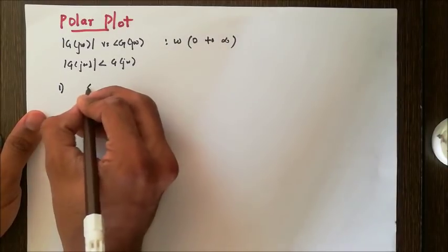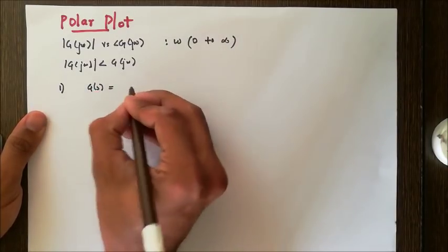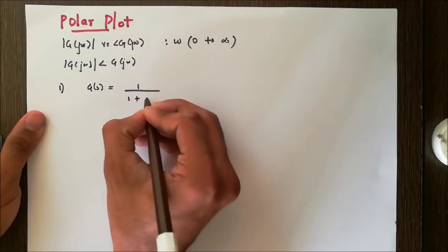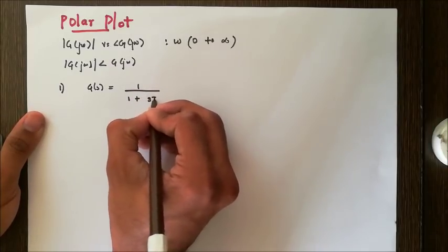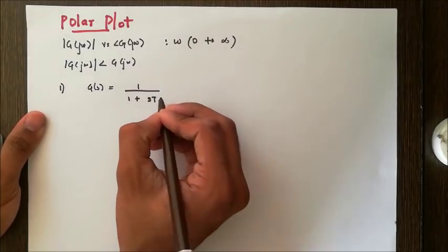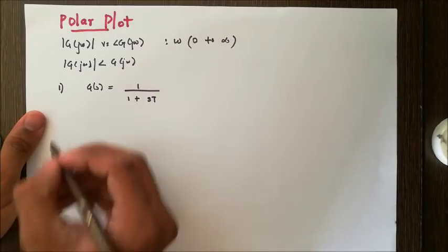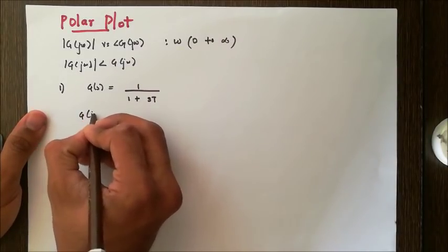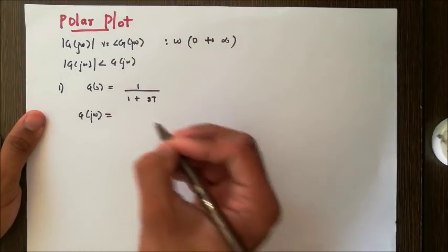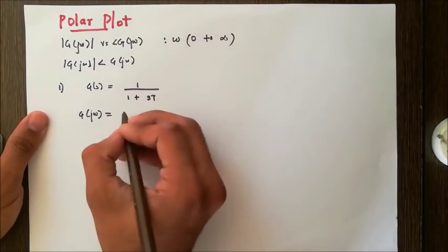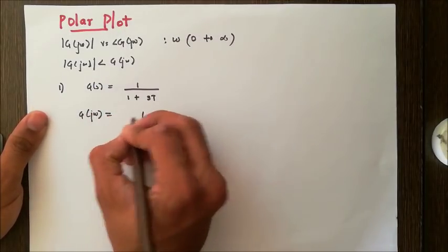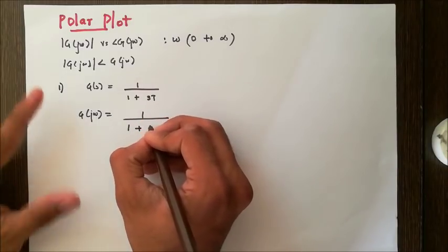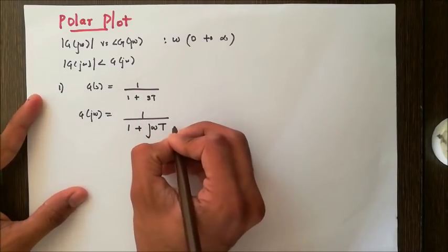Let me consider a simple transfer function: G(s) = 1 / (1 + sT). The first step is to substitute s = jω in this equation, so G(jω) = 1 / (1 + jωT).